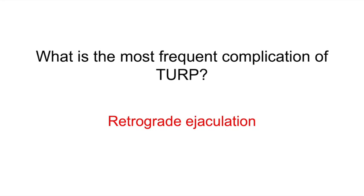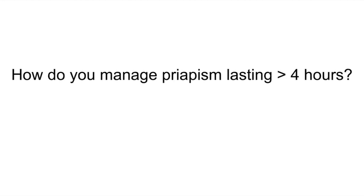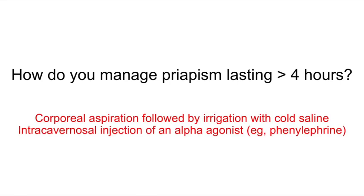How do you manage priapism lasting greater than four hours? Corporeal aspiration followed by irrigation with cold saline. You can also give intracorporeal injections of an alpha agonist such as phenylephrine. Another high-yield concept is that ischemic priapism can be diagnosed by confirming it with a blood gas analysis of a corporeal aspirate.